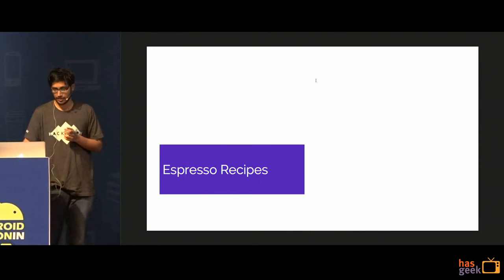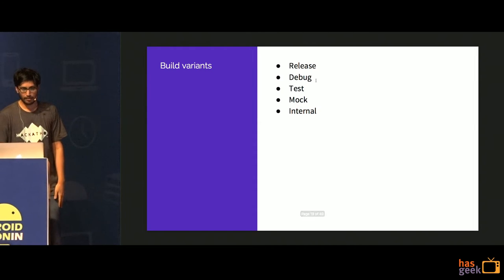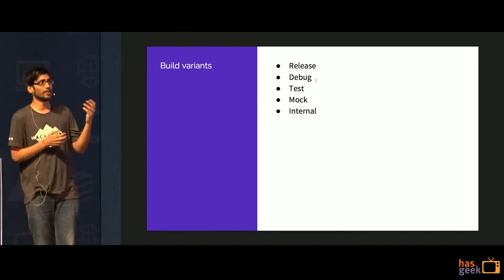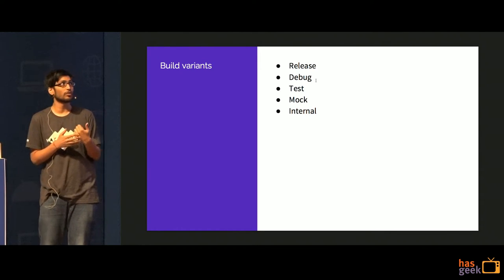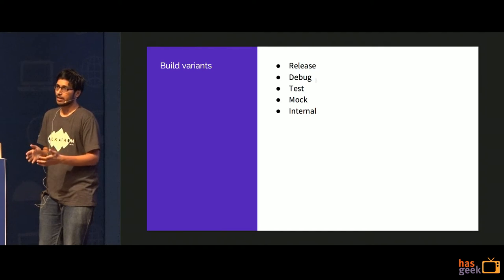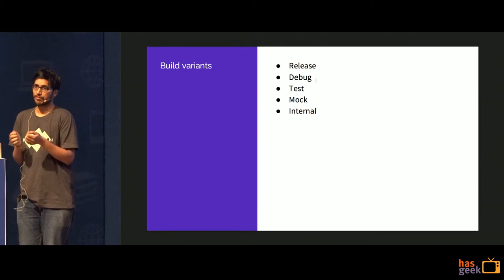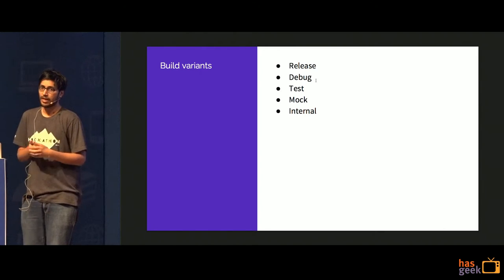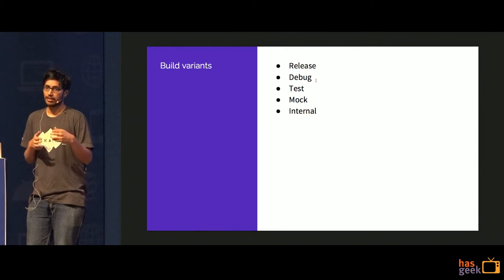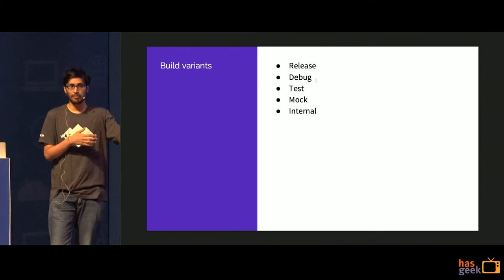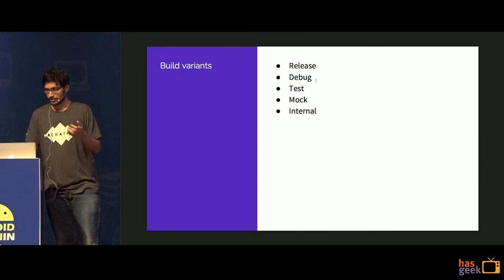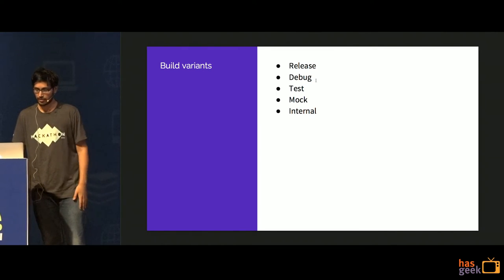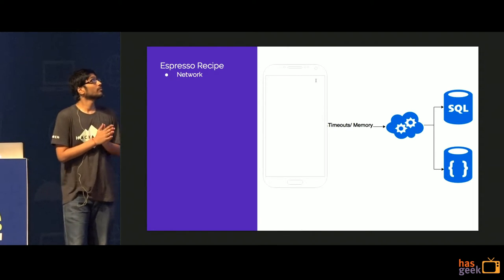Now I'm going to talk about recipes — the more interesting things. First, a quick introduction to build variants. Build variants can be release (what you upload to the Play Store), debug, test, mock, or internal. For release you can enable crash analytics; for debug you can disable SSL pinning to see network logs and enable Stetho. Most of the code we'll discuss today will live in debug, test, or mock variants — things you really don't want the actual user to see.